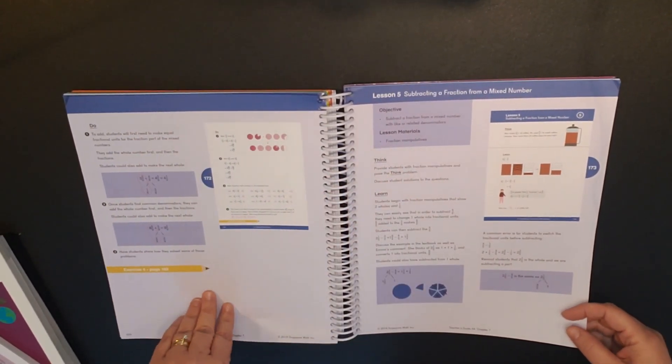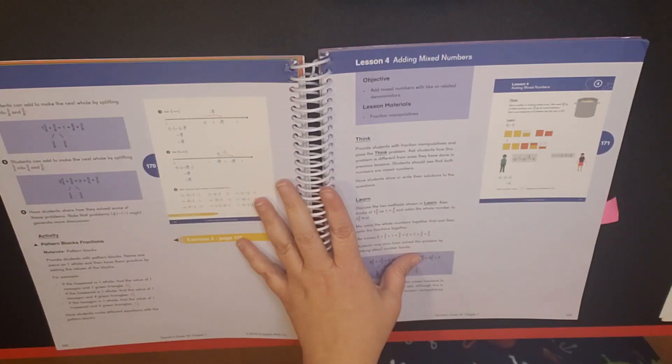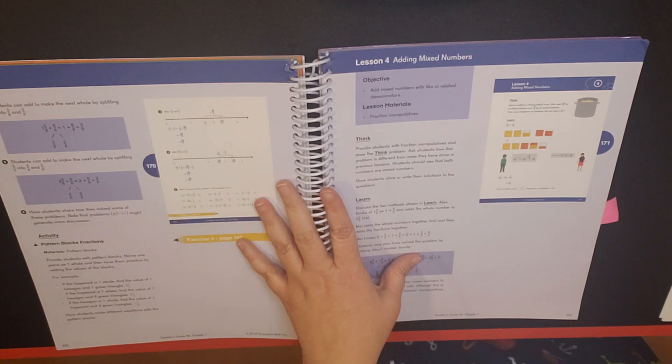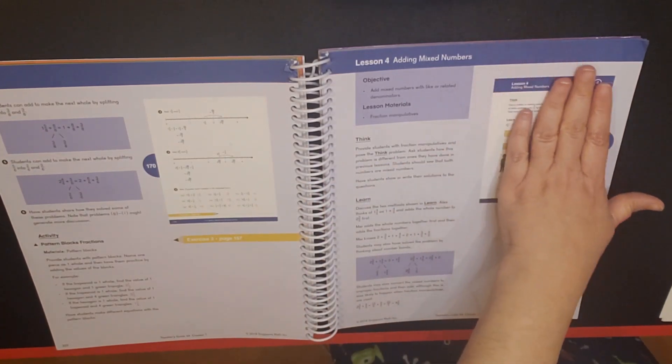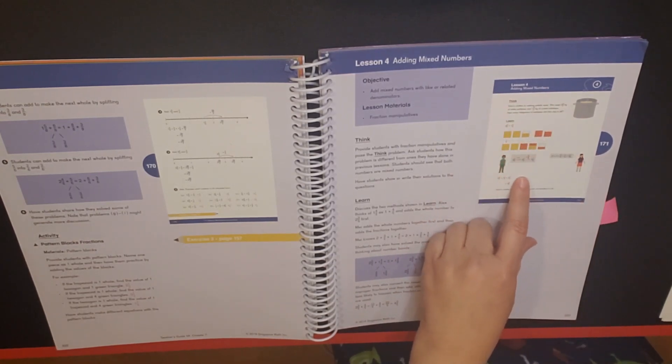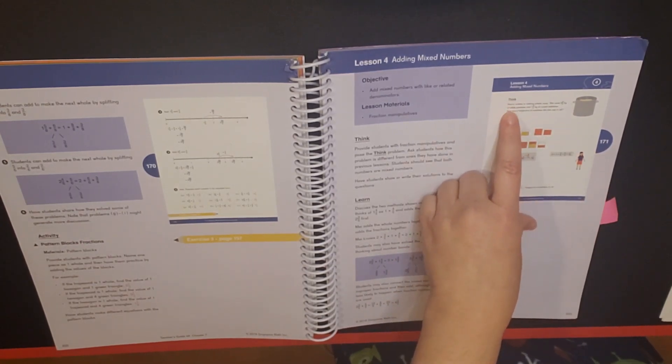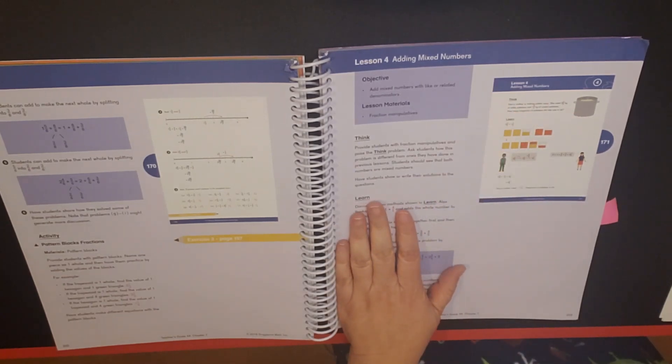Think, learn, do, exercise and practice. Think is where you would provide the students with the manipulatives and then in the student textbook which this is the exact replica, the exact picture of the student textbook except it actually has the answers in it.